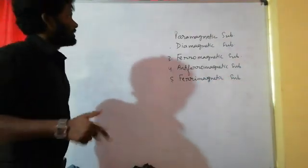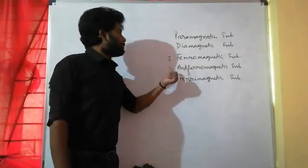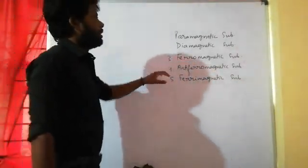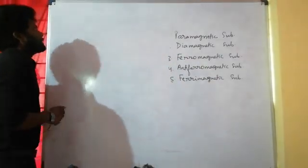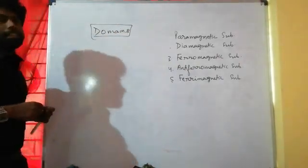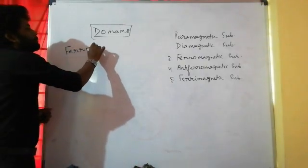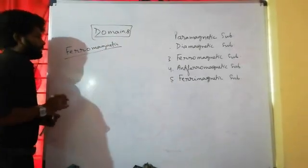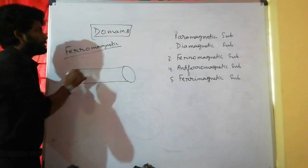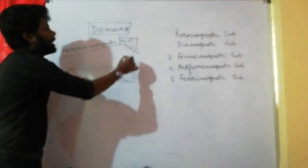Good morning everyone. Last class we discussed paramagnetic and diamagnetic substances. Today we will discuss ferromagnetic substances, anti-ferromagnetic substances, and ferrimagnetic substances. But before discussing these three, we have to study domains — especially in ferromagnetic substances. One example of a ferromagnetic substance is iron.